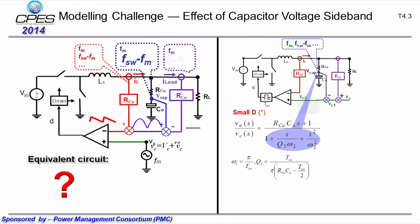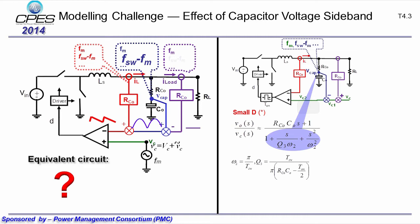From the describing function result, the capacitor voltage feedback causes a pair of double poles at half of switching frequency. From the Bode plot, we can see that the gain is 1 at low frequency, which means the output voltage can well follow the control signal at low frequency. At half of the switching frequency, there is a double pole — physically meaning that the capacitor voltage feedback turns the circuit into a non-ideal voltage source.